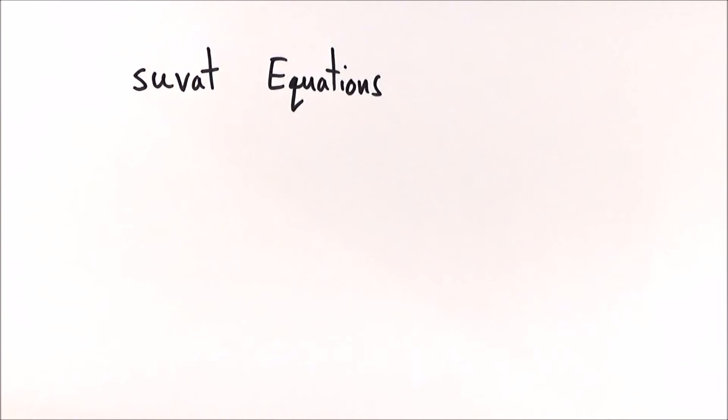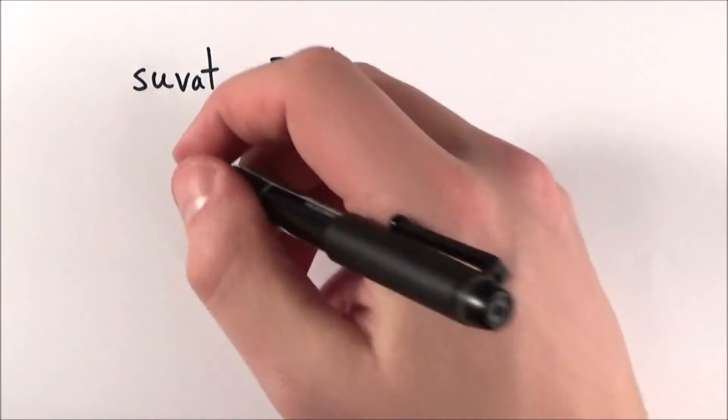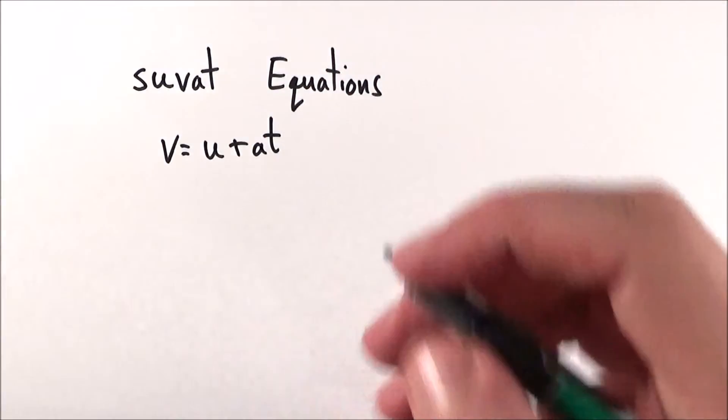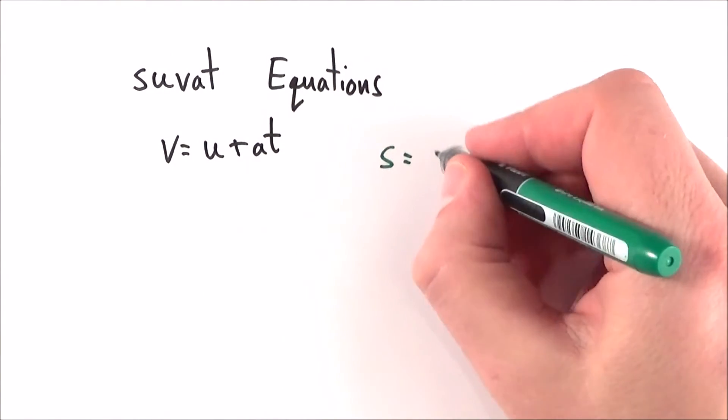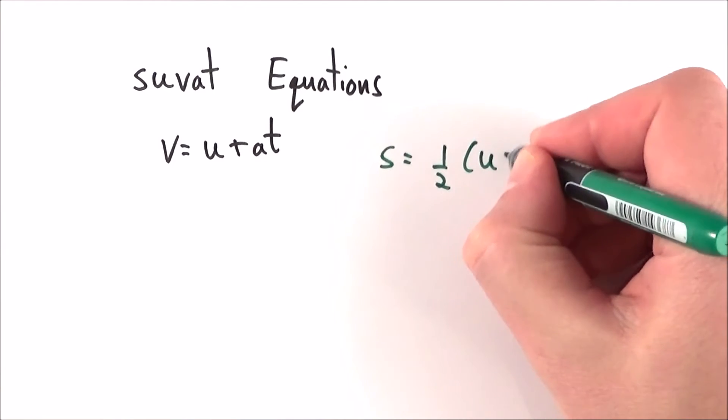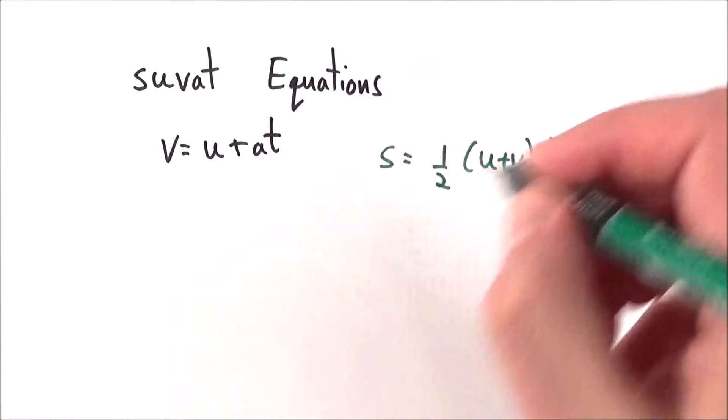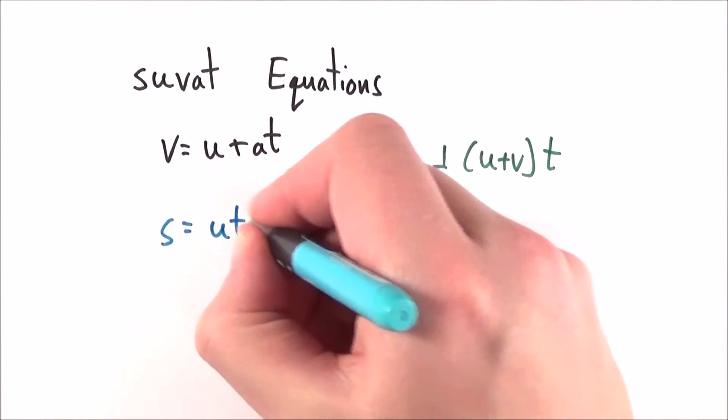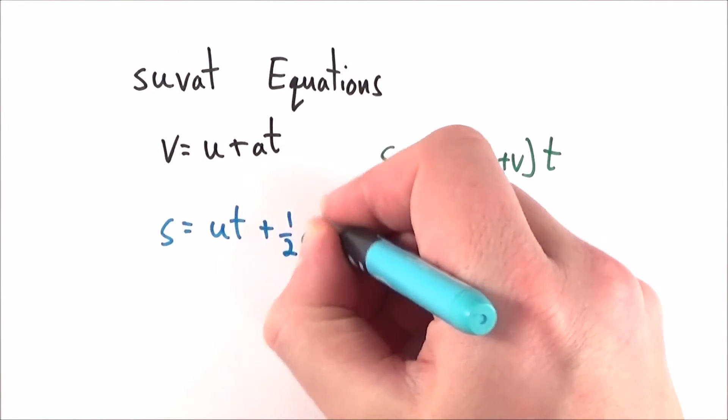We have four SUVAT equations. The first is v = u + at. The second is s = ½(u + v)t. The third is s = ut + ½at².